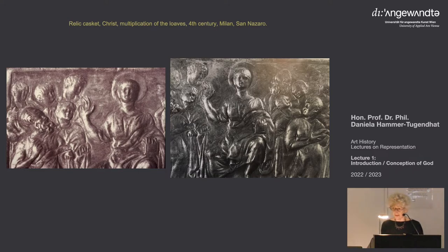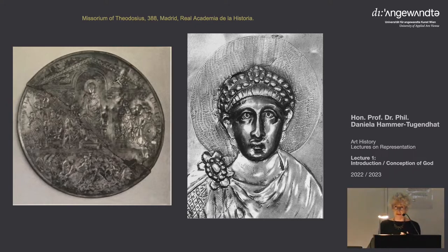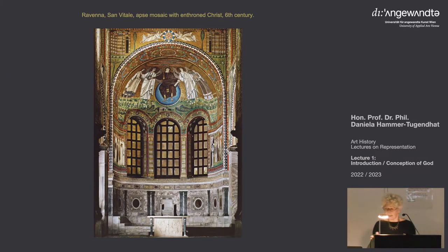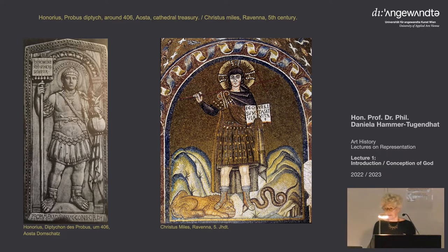Here you see Christ as a ruler, now at the time of Theodosius at the end of the fourth century. And here you see Theodosius — you see how similar it is; Christ looks like a profane emperor. In Ravenna, in the sixth century, you see again Christ as ruler of the world, and even Christ as a soldier looking like a Roman soldier. So very different images — strange for us, because we are not normally used to this kind of image of Christ.